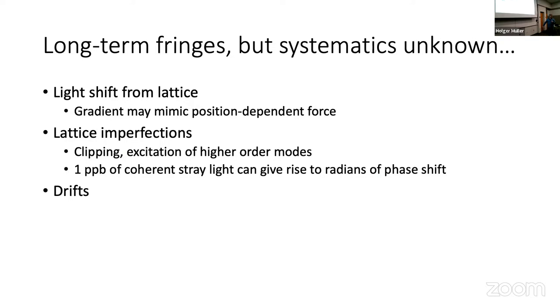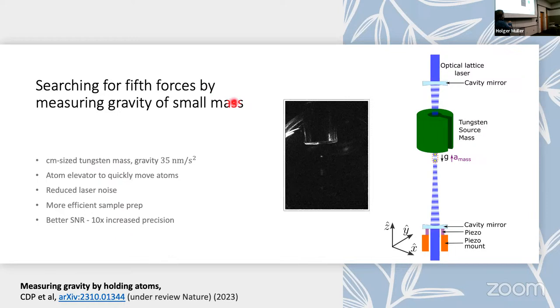The other thing is, well, can I use that for anything? The lattice interferometer may have long term fringes, but the systematic effects are a big can of worms. The optical lattice generates a light shift. That's how it works. If that light shift has a gradient, it mimics a force, and that would be a huge systematic in measuring gravity. Lattice imperfections may give that force a complicated spatial dependence. But we wanted to use it for measurement. We wanted to use it for searching for fifth forces along the lines that I've already shown you. But now taking advantage of the lattice hold. The hold gives us a unique advantage over atoms in freefall.